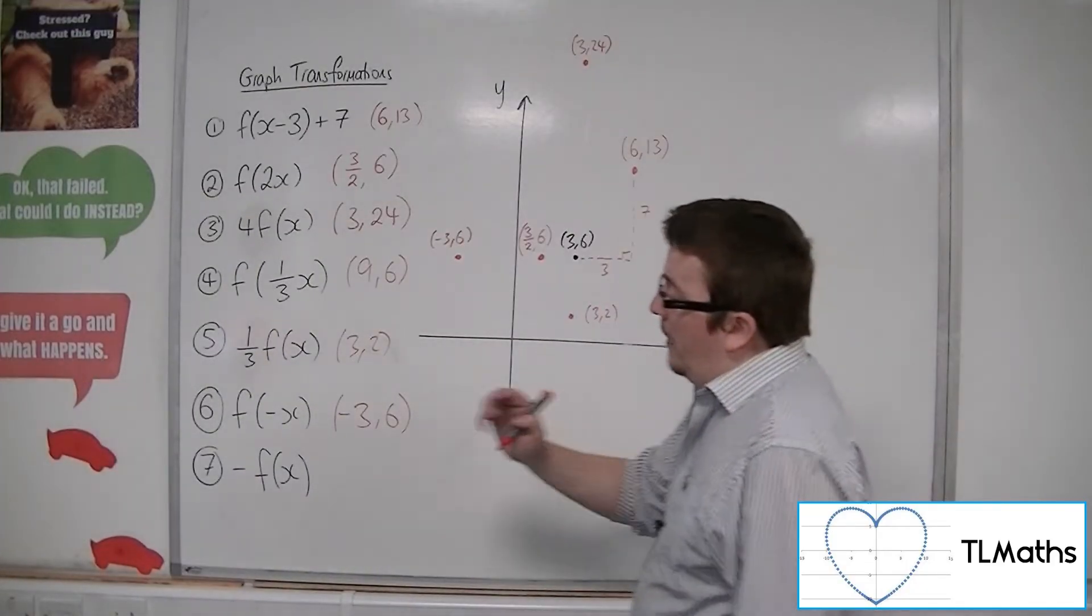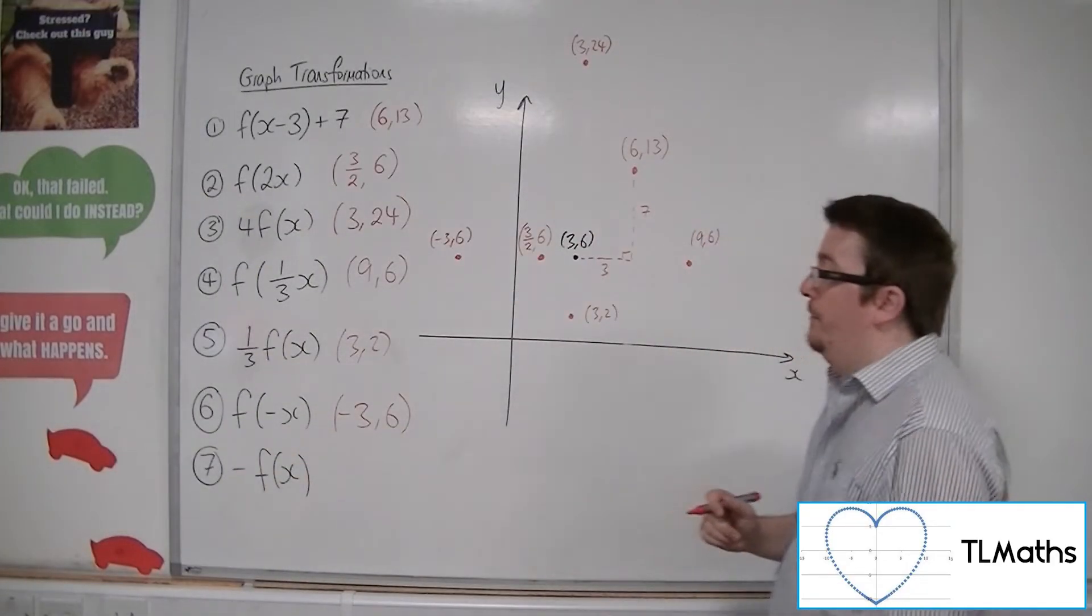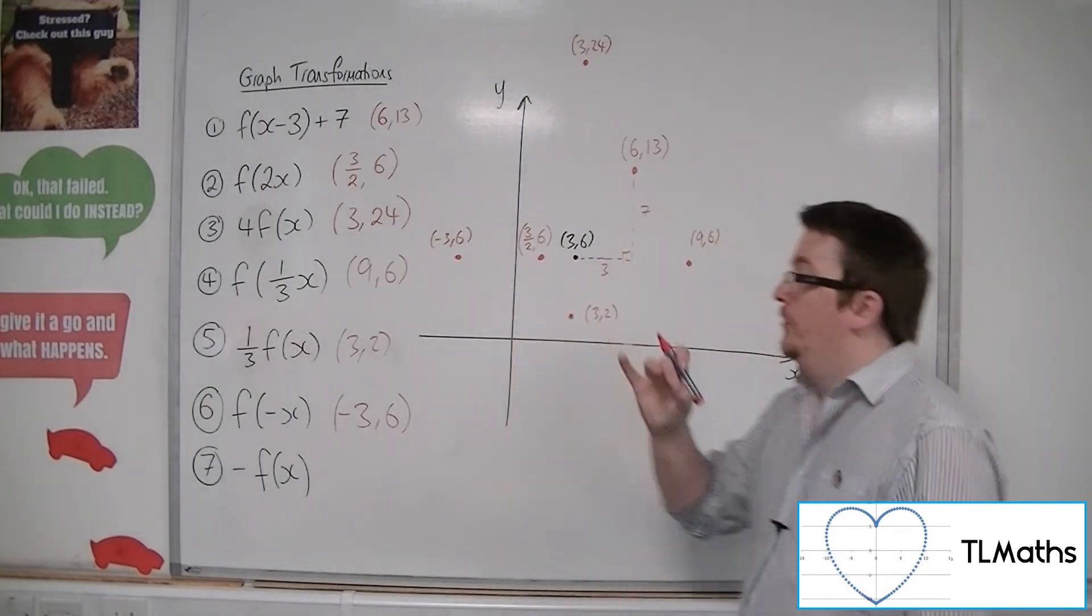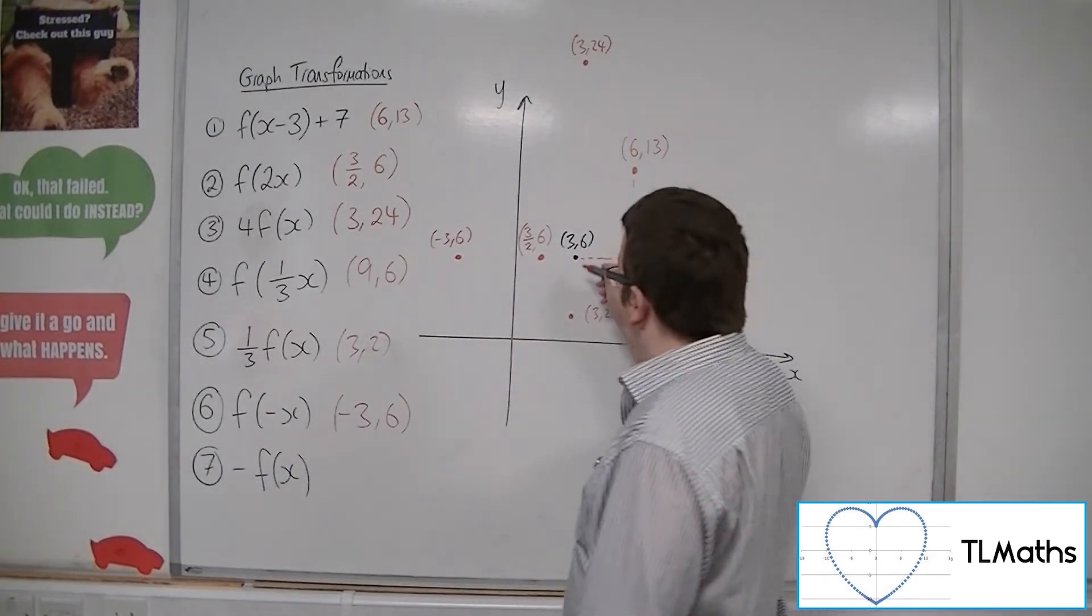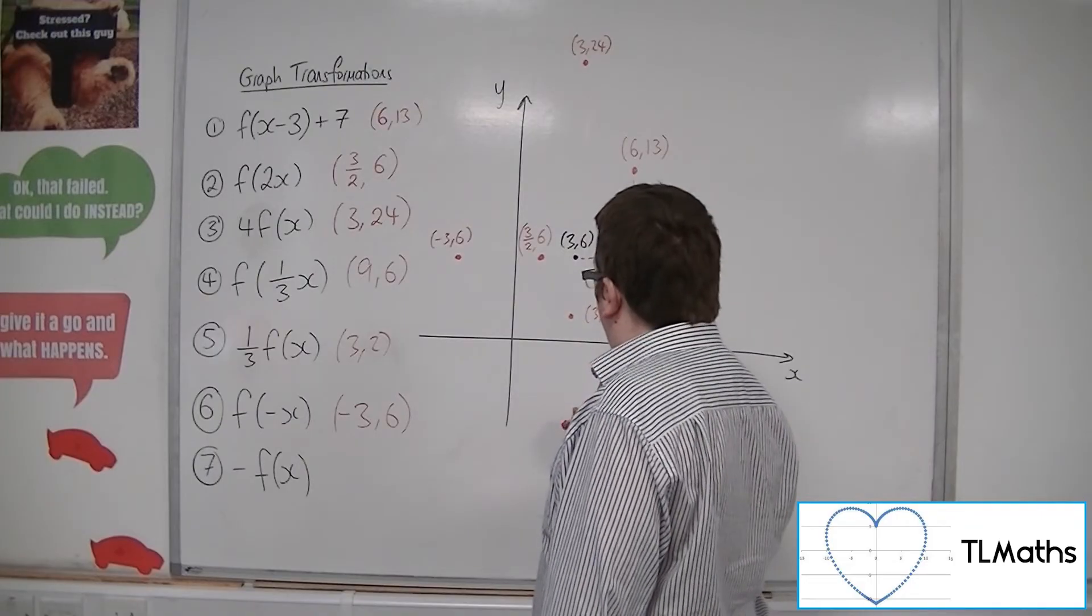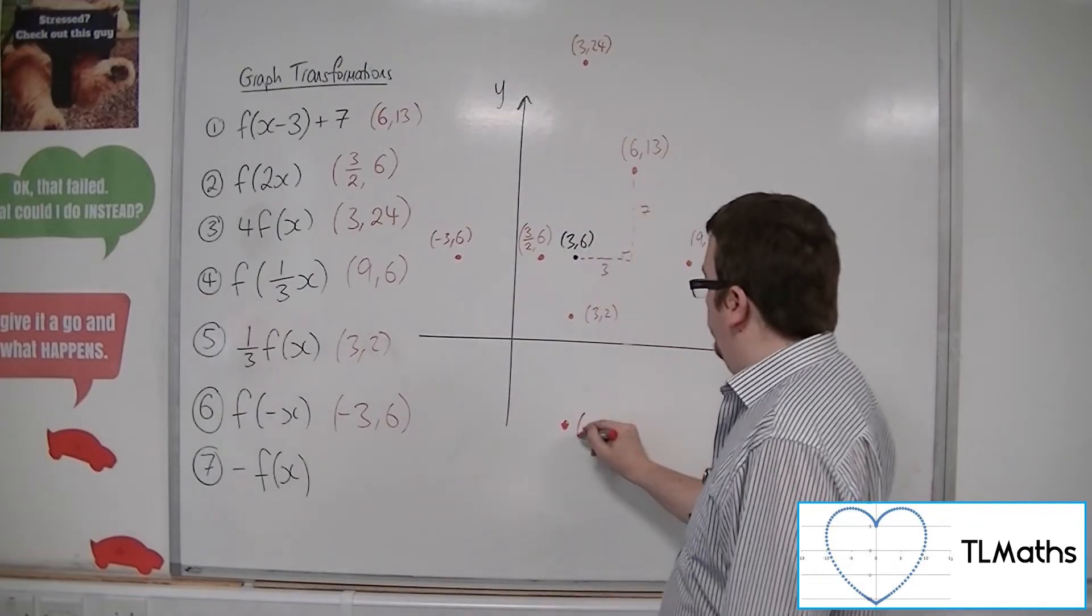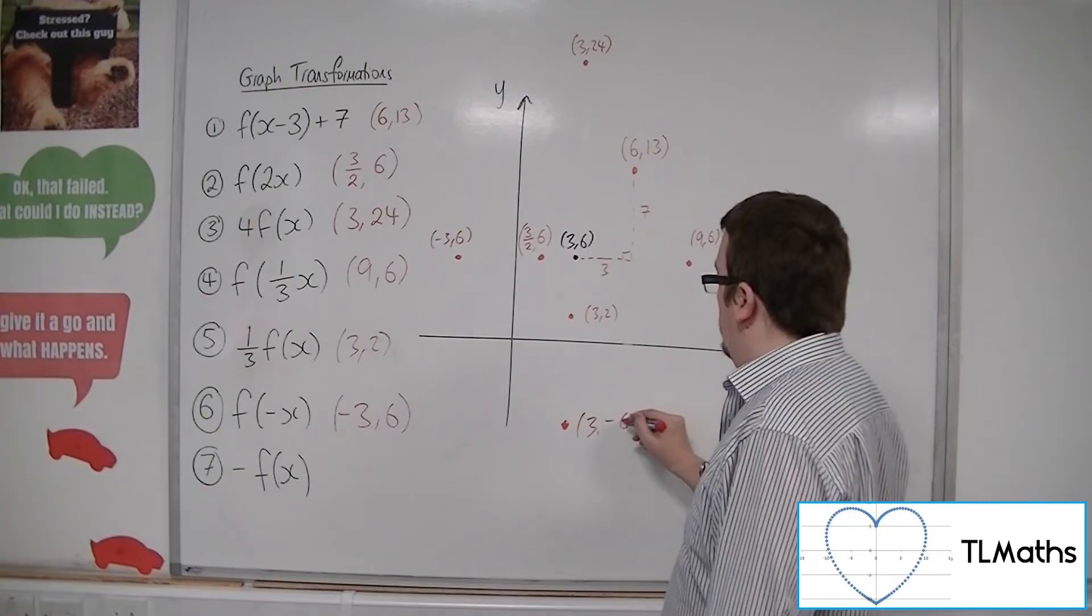And if we have a minus sign outside of the f(x), that means it's the y coordinate that is changing sign. And so that is a reflection in the x-axis. So 3, -6.